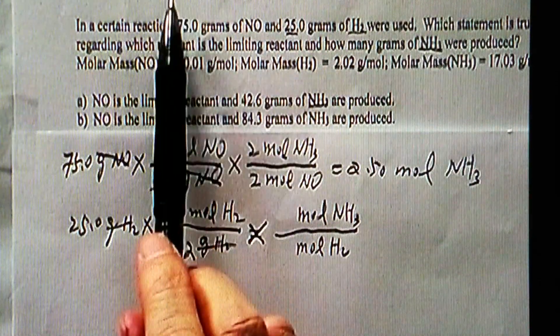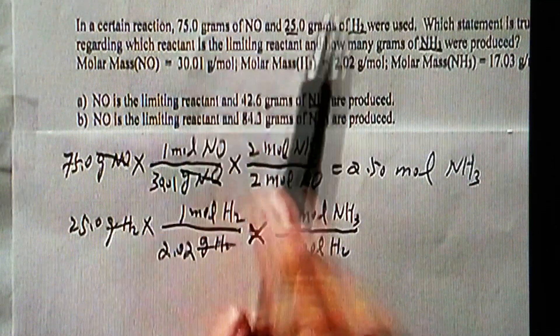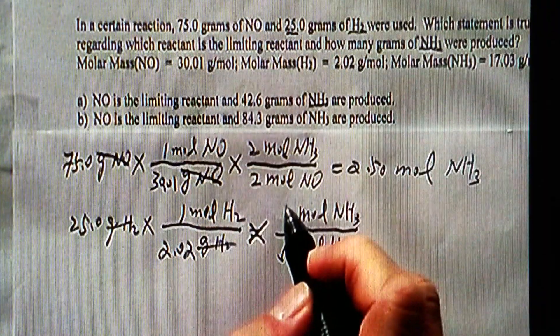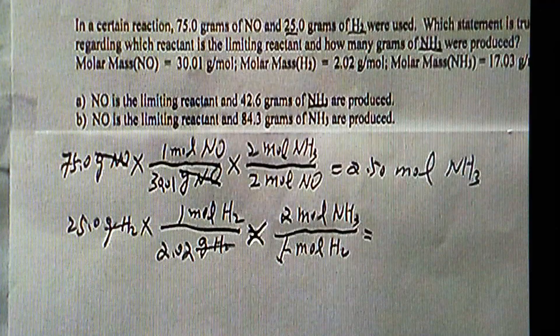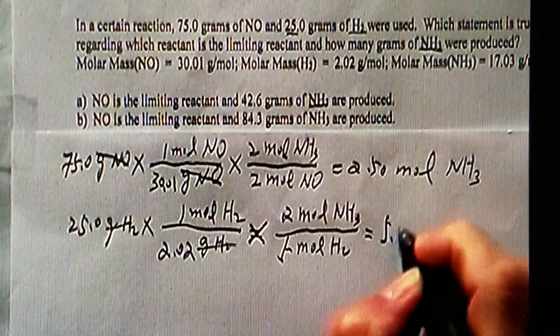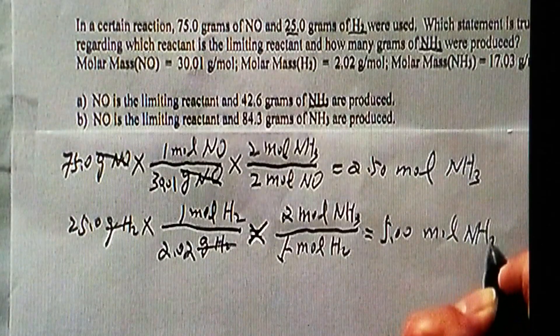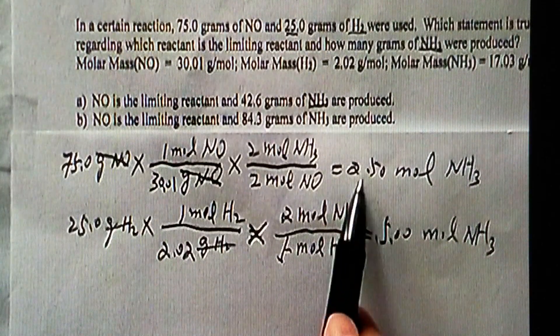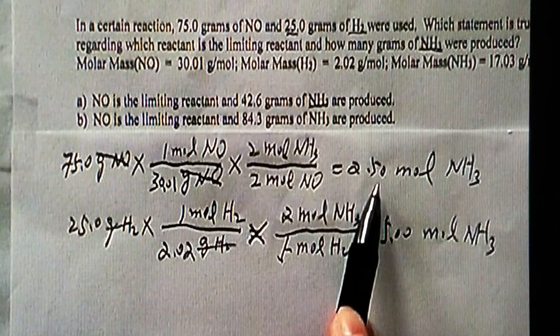Look at the coefficient from the balanced equation. For hydrogen, 5. Ammonia, 2. And this gives me 5 moles of ammonia. Compare these two values. The smaller number is produced by the limiting reactant.